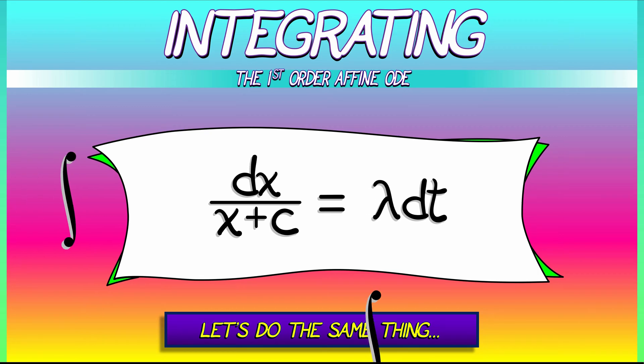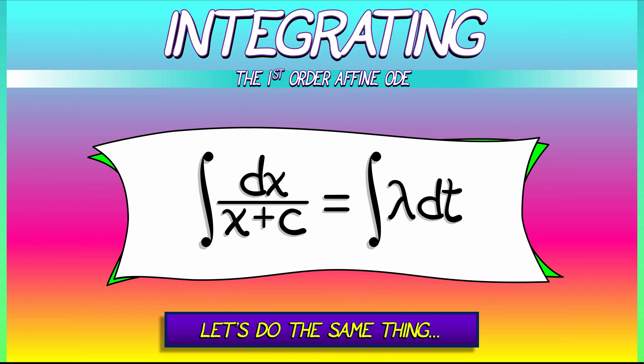Because we integrate both sides. When I integrate the right-hand side, it's lambda dt. That gives me lambda t plus a constant. Let's call that constant little k.